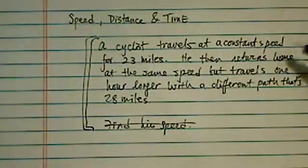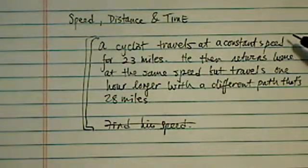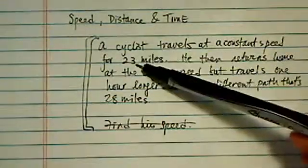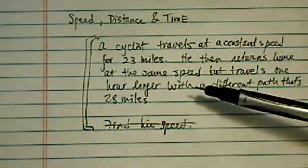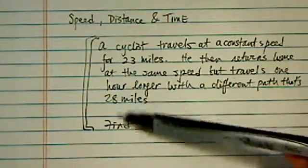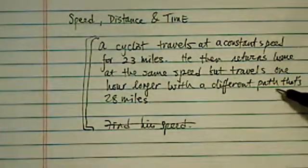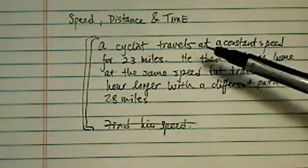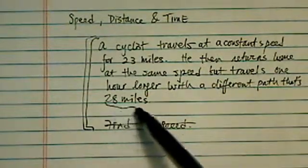We're given a cyclist traveling at a constant speed, which we're supposed to find. He traveled for 23 miles, and then he went home at the same speed, but this time maybe a scenic route. He went longer for another hour than he spent the first time, and he went on a longer path.